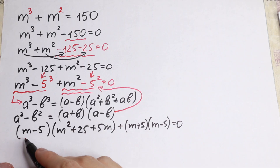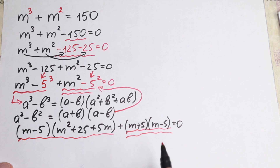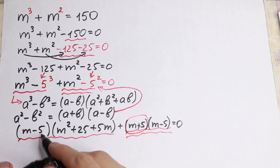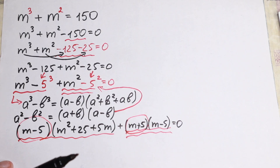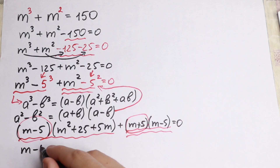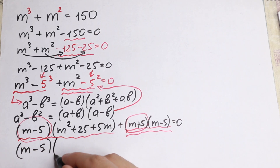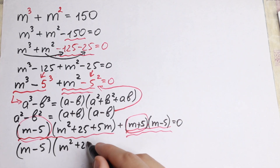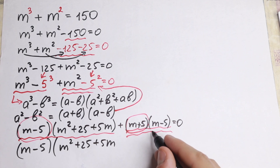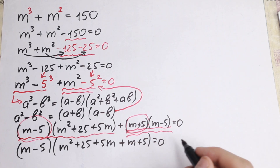So this is the difference of two cubes and this is the difference of two squares. I can see that (m minus 5) appears in both terms — it's really good to factor out (m minus 5). So let's factor that out. We have (m minus 5) and in the second parentheses we will have m² plus 25 plus 5m.